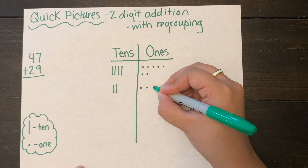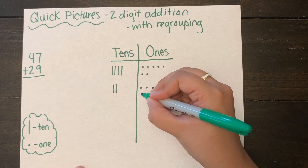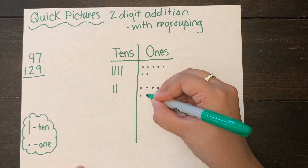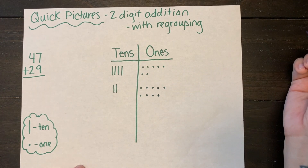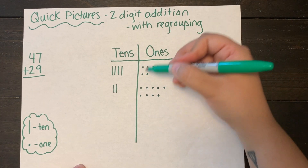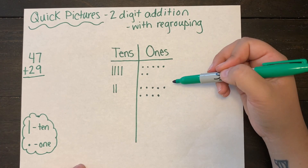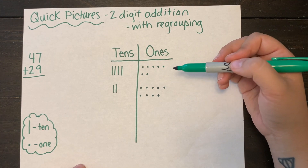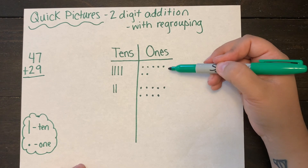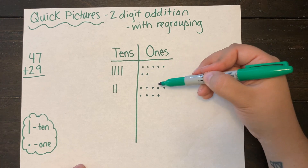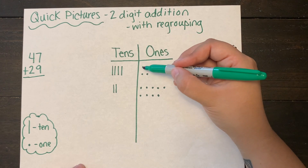After I draw these I'm going to start adding my ones column first, and I'm going to run into a hiccup so pay attention. I see in my ones column I have way more than nine, which is the maximum amount of numbers that you can have in a column. So I need to figure out what I can regroup and put into my tens column.